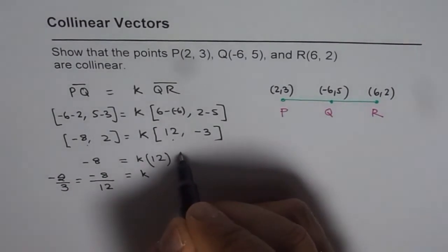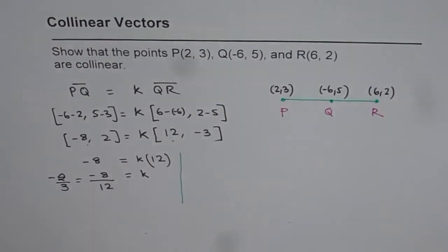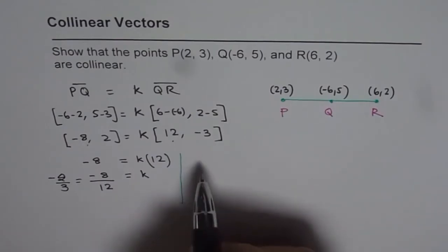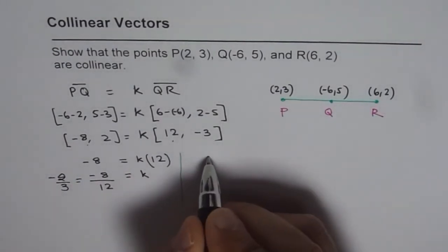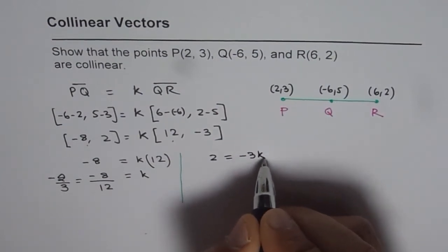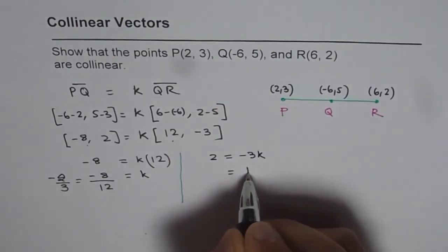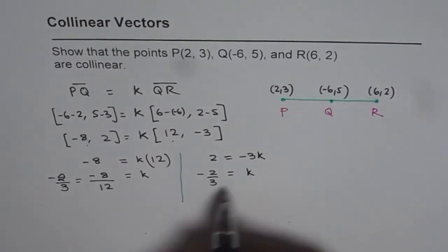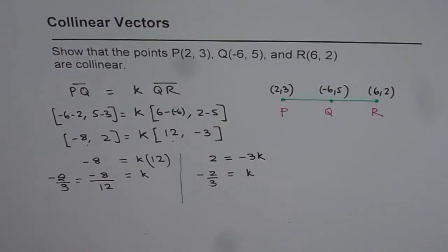Now if 2 over 3 works for the Y value, then we say it is perfectly fine. Or the other way is we can equate the second part, which is 2 equals to minus 3K. Now from here we can find what K is. From K, it will be minus 2 over 3. Now since we get the same value of K, which is minus 2 over 3,